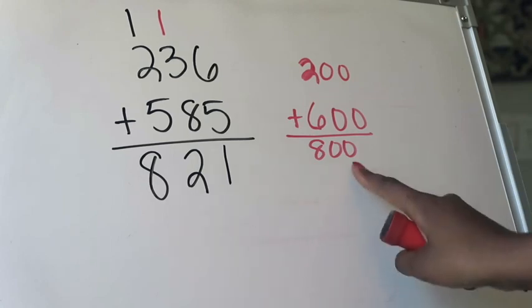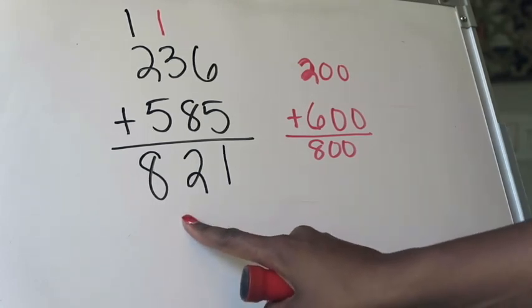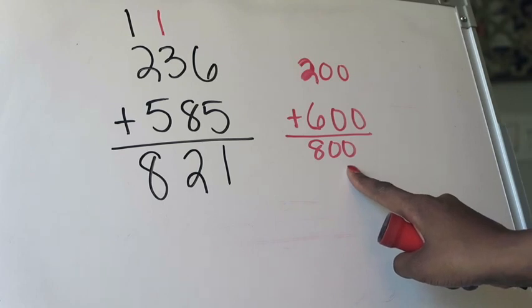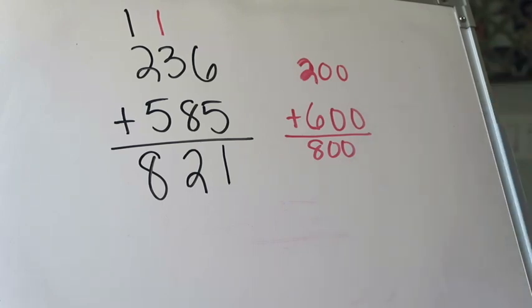Before I feel good about it and say I'm done with this problem, I'm going to check it to my estimate and say, is 821 close to 800? And I think that it is, so I know that I'm good to go and I'm ready to move on to the next example.